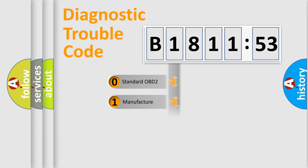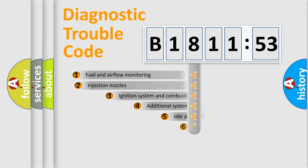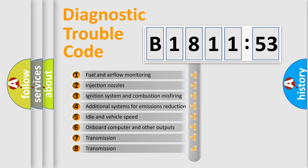If the second character is expressed as zero, it is a standardized error. In the case of numbers 1, 2, 3, it is a more prestigious expression of the car-specific error.